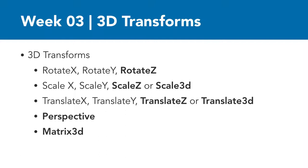Matrix3d is similar to the matrix function from 2D transformations, but more complex — it actually takes 16 values. Because of its complexity, we won't be covering that in this course, but we will cover all the other 3D transform functions. Now that you have a quick overview of the transform functions and how the axes work, we'll go ahead and start applying these to web elements.